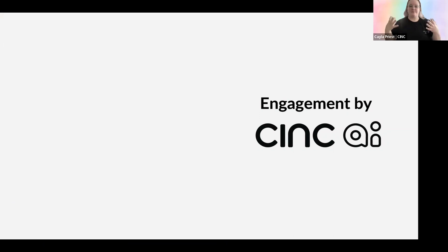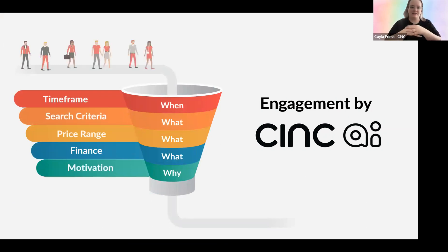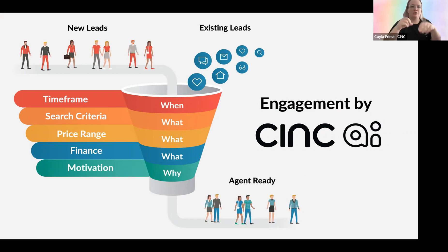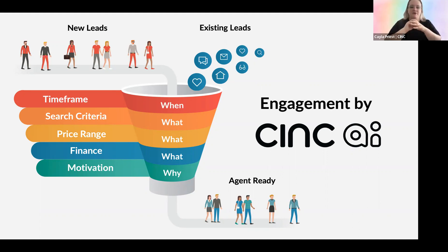Now that we understand the thought process behind how Sync AI was created and why it was created, let's break down how it actually works. This funnel talks about engagements and how it will work with both new leads and existing leads. New leads are going to be leads that just registered on the site — people that said they're interested in a certain area, a home of a certain size. We know all of that because we know what they've looked at, but we don't know that final piece of the funnel: the motivation. So Sync AI not only confirms time frame, search criteria, price range, and financing, but it also attempts to have that conversation around motivation.